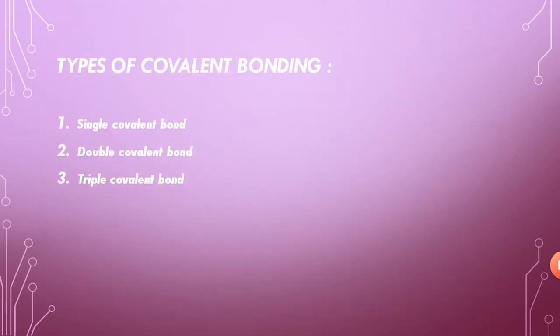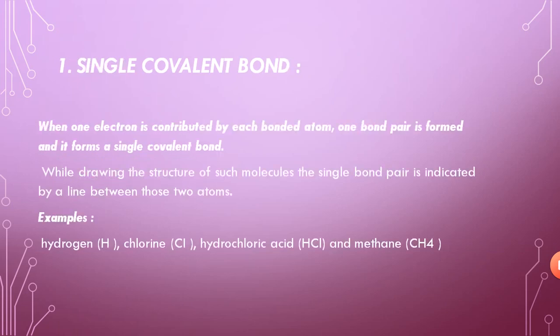There are different types of covalent bonds. We know that all chemical bonding has types — ionic and covalent — and the covalent compound has further important types: the single covalent bond, double covalent bond, and triple covalent bond. When the single covalent bond is formed, as the name suggests, it is made by the sharing of a single electron pair from both atoms.